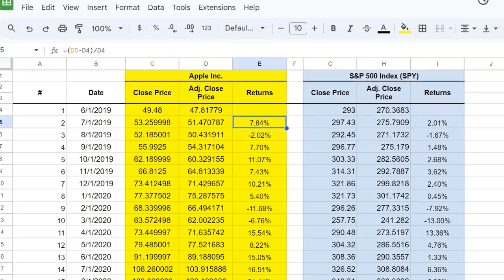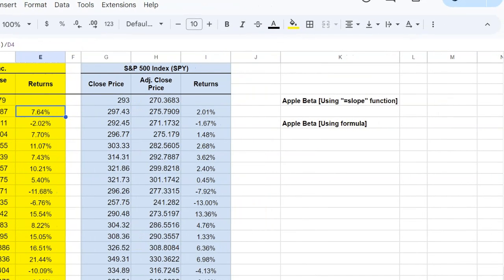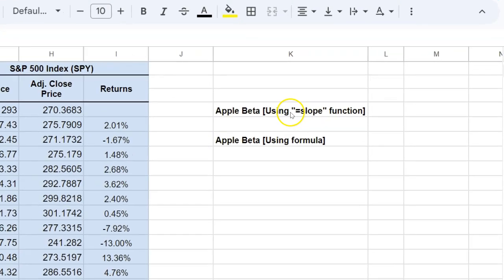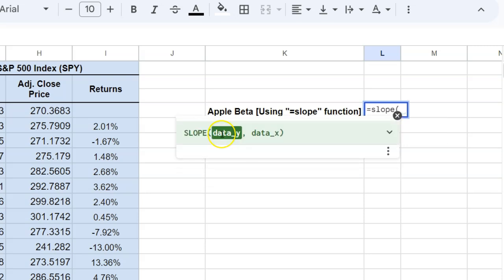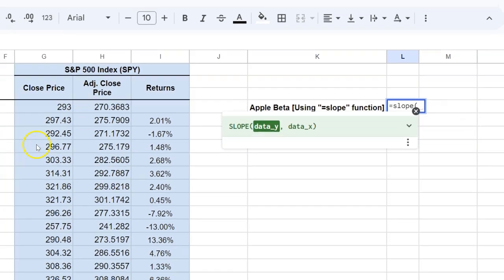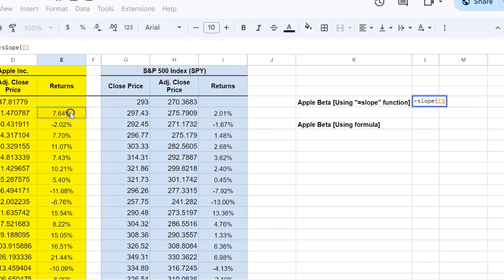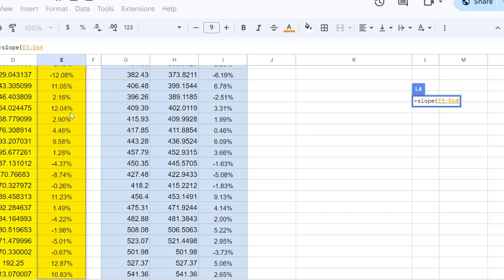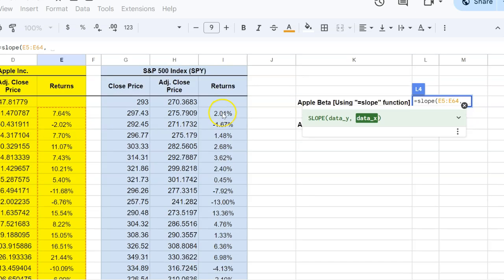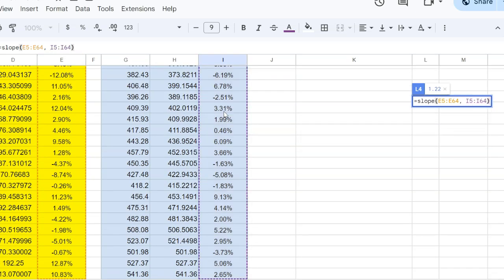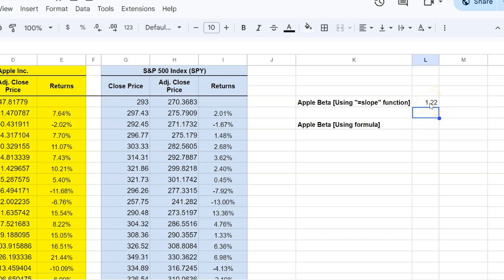Once you have the returns then calculating the beta is a straightforward exercise. I'll show you two different ways of doing it. So one is using what is called the slope function in Excel. So if you do equal to slope, Excel will ask you okay tell me the data that you're measuring on the y-axis. On the y-axis you're measuring the returns of your stock. So just highlight all these 60 observations on the stock returns and then it will ask you okay what is the data on the x-axis. Well you saw that on the horizontal axis we're measuring the returns on the S&P 500. So we will highlight all these data points. So once you do this when you press enter you will see it will give you a slope of 1.22.